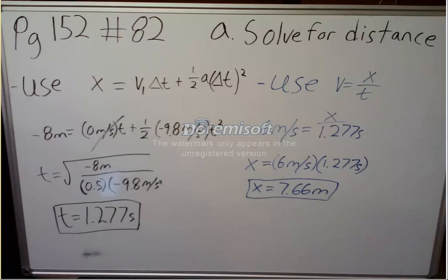As you can see, part A says solve for the distance. What's given to us is we can figure out the final displacement of the clam, and that's because when it hits the ground it should be negative 8 meters, as it's 8 meters above the ground.